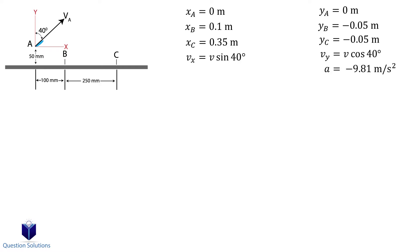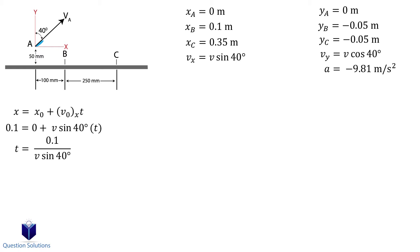We can now write our equations. First, for horizontal motion focusing on point B, we can use this equation. Let's substitute what we know. We can isolate it for t and then set it aside to write an equation for vertical motion, again focusing on point B.